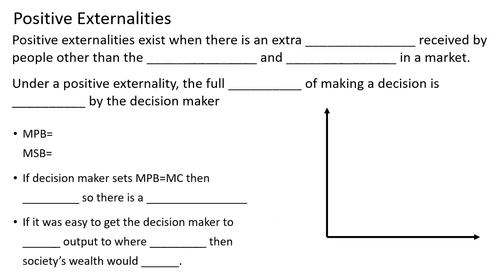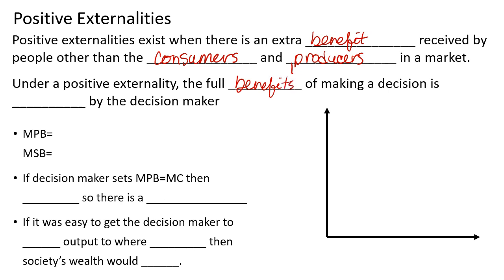Positive externalities are when there is an external benefit — someone other than the purchaser and the producer benefits from this market existing. Under a positive externality, the full benefits of making a decision are not considered by the individual.